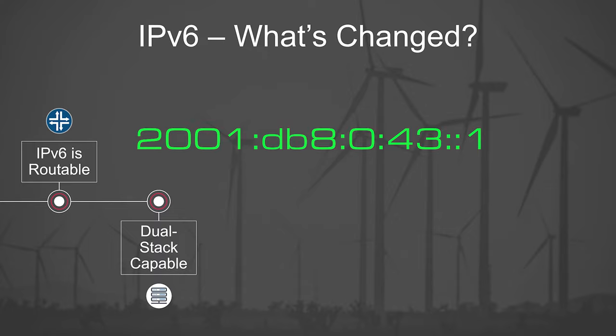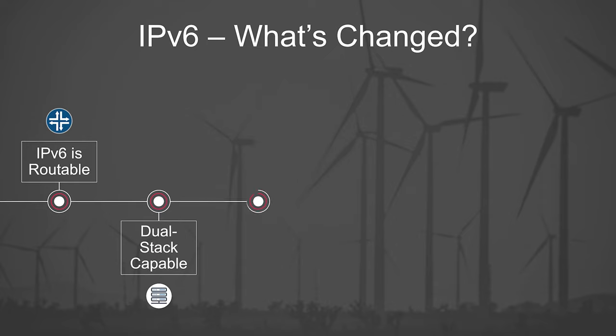We'll see how this works in the next video. NAT was intended to be a short-term solution for IPv4 address exhaustion, so there's no NAT or PAT as we currently think of it in IPv6. There are some types of NAT, such as NAT64 and NAT46, which translate between IPv4 and IPv6 addresses — but these are really only there to help with the migration. There is a NAT66, which is like old-fashioned NAT, but it's really not recommended.